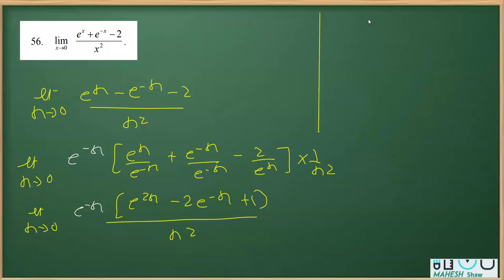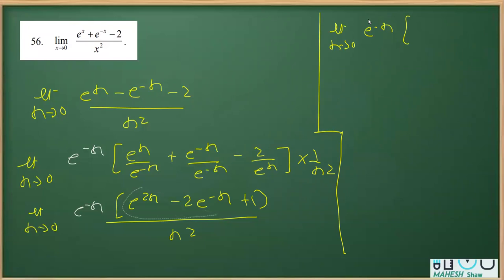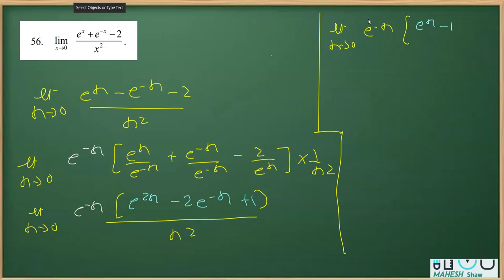In the next part, I'm going to apply the identity of (a minus b) whole squared. We can see that the expression inside can be written in the form a squared minus 2ab plus b squared. So this becomes (e raised to the power x minus 1) whole squared. I notice one mistake: the sign should be positive, so we get (e raised to the power x minus 1) whole squared, divided by x squared.